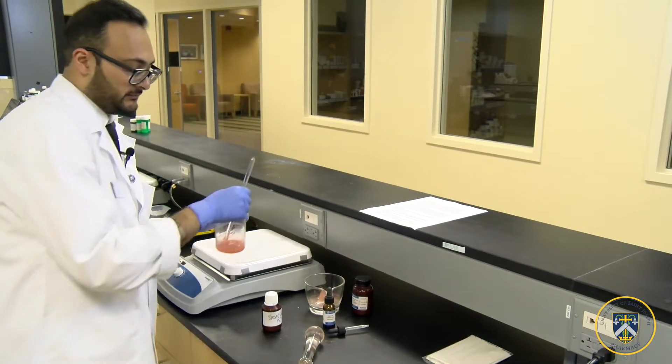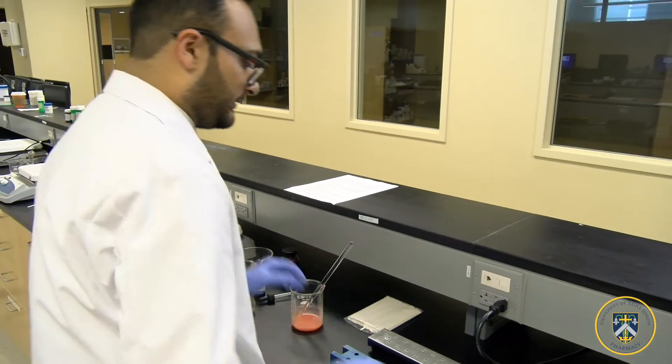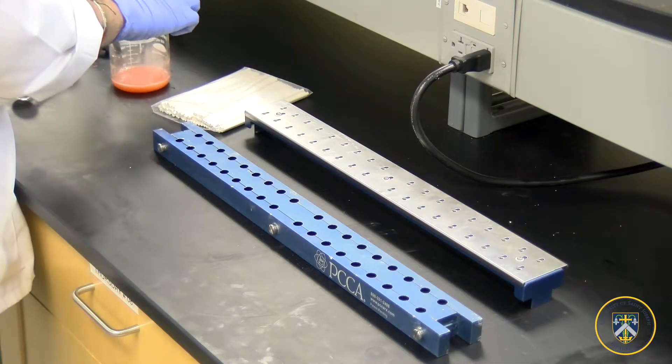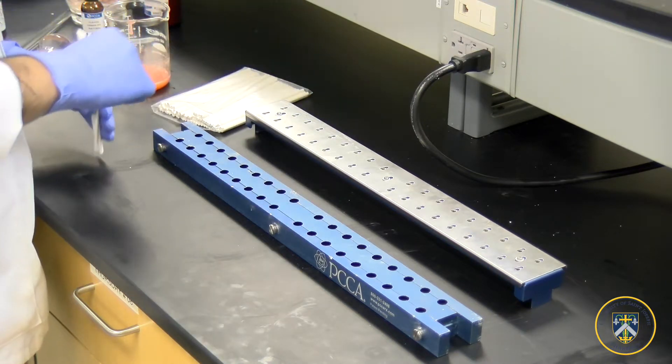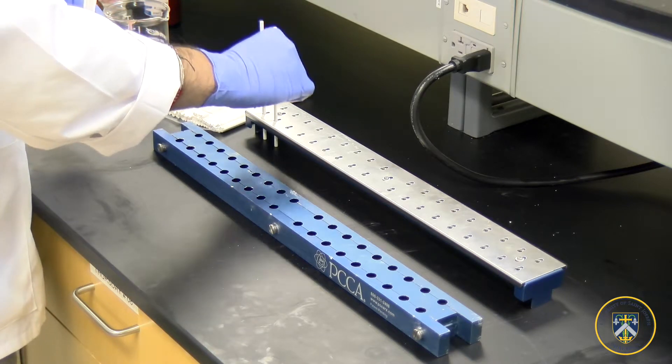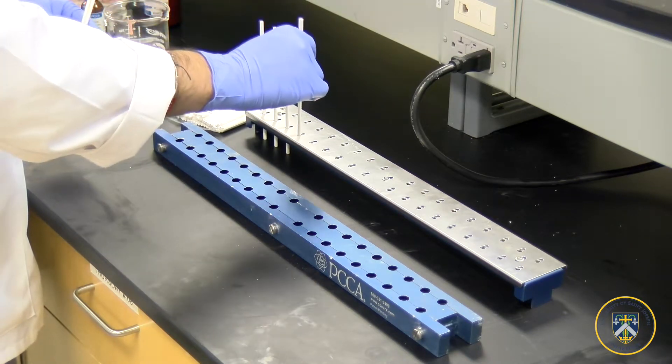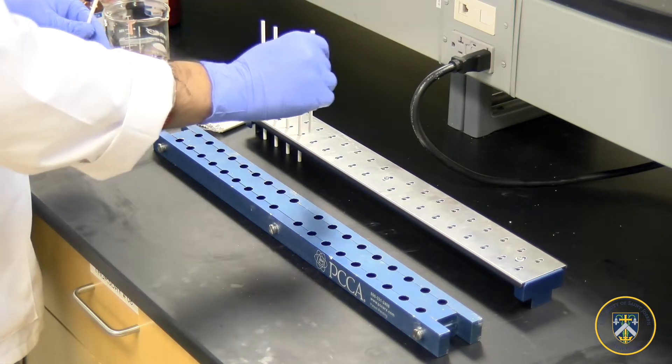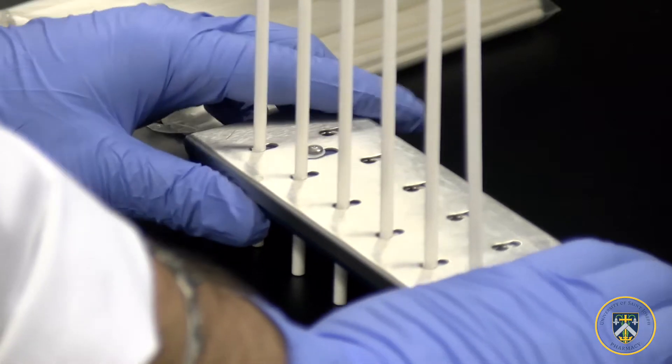After that you can remove the melted base from the hot plate and begin pouring it into your mold. Before that, add the sticks to the top part and lock it in place.